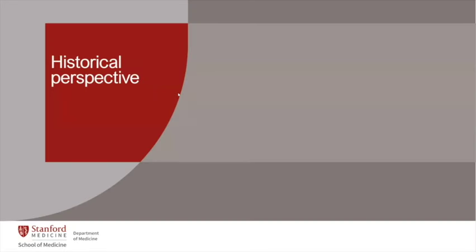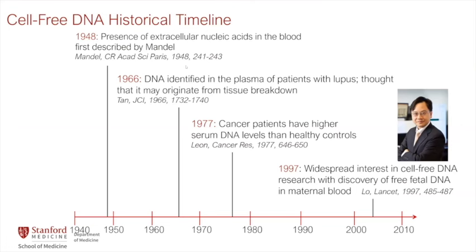The presence of extracellular nucleic acids in blood was first described by Mandel, a French scientist, in the late 1940s. In 1966, high levels of DNA were identified in the plasma of patients with lupus, especially during disease flares. In the 1970s, cancer patients were found to have higher cell-free DNA levels than healthy controls. The field really opened up in 1997 with the discovery of free fetal DNA in maternal blood during pregnancy, a landmark discovery made by Dennis Lowe, a professor in Hong Kong.